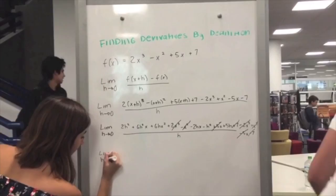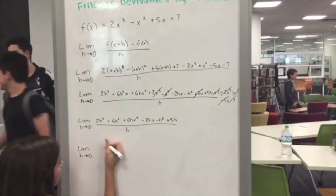Take out the h, which is a common factor. Then it will eliminate with the h that is dividing.